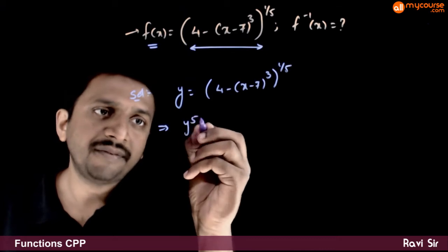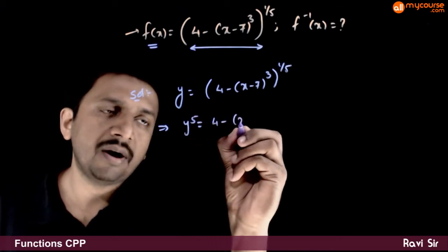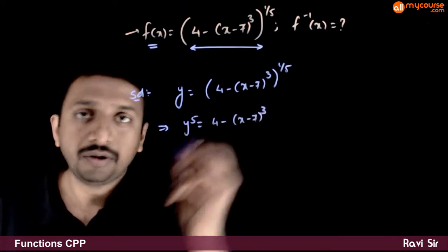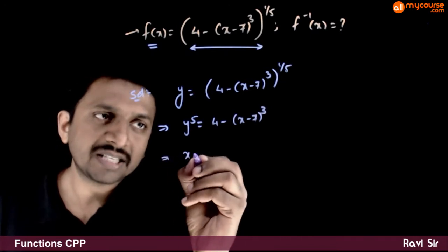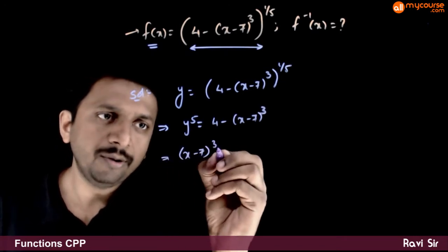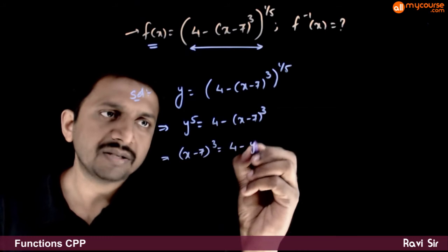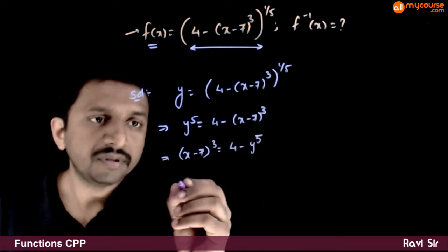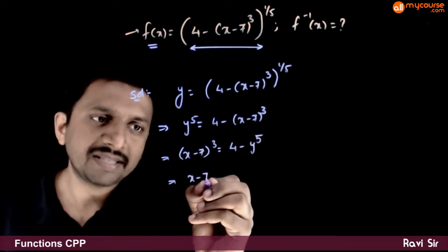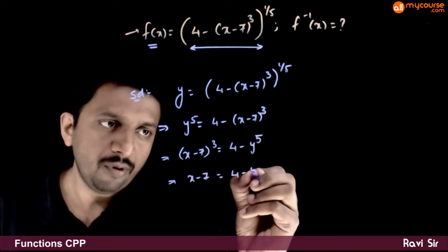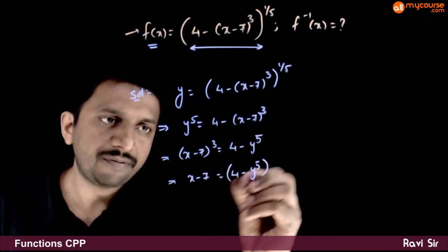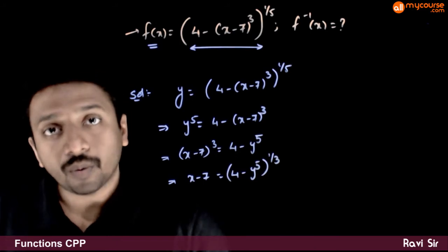So y power 5 is equal to 4 minus x minus 7 whole cube. This implies x minus 7 whole cube is equal to 4 minus y power 5.